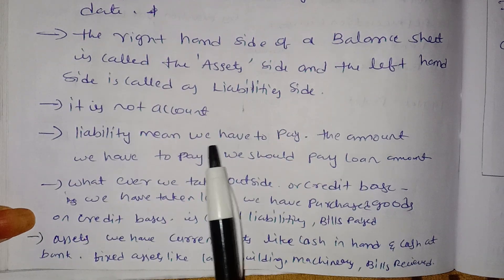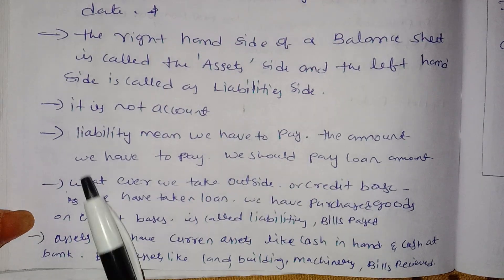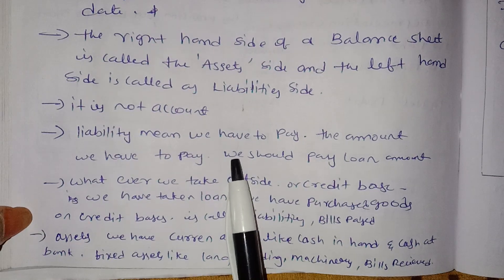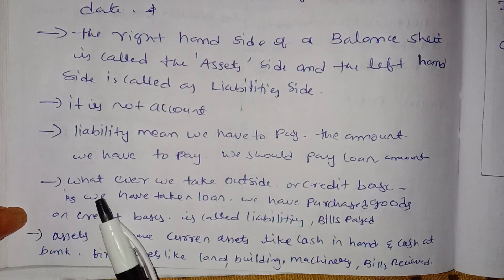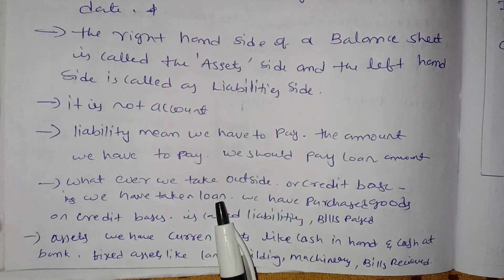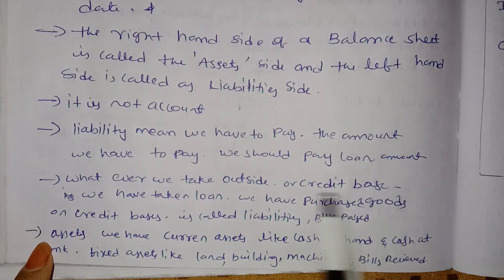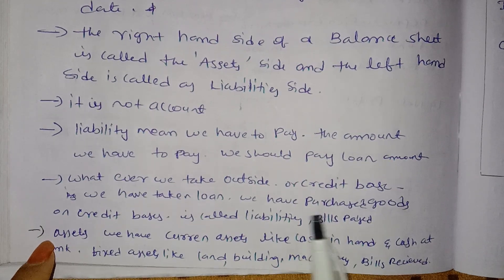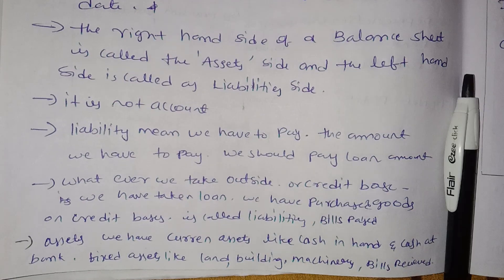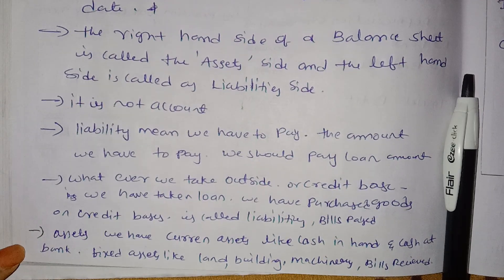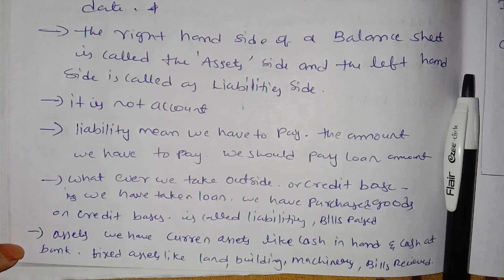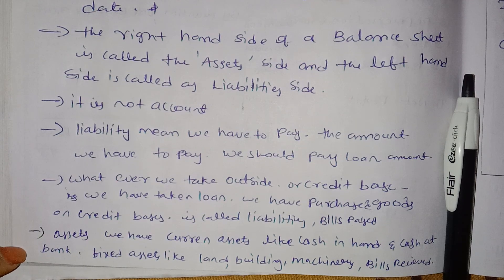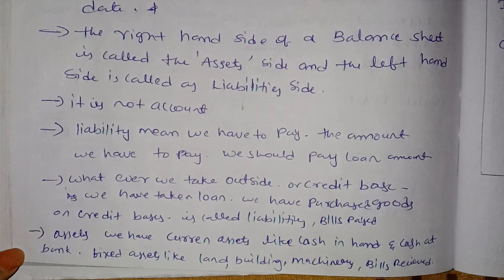Liability means we have to pay an amount. We have to pay loan amounts — whatever we take from outside on a credit basis, we take a loan. We purchase goods on credit basis — that is called a liability. Liabilities include loans payable to banks, relatives, bills payable, and credit liabilities.